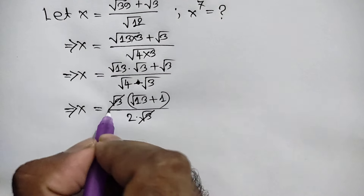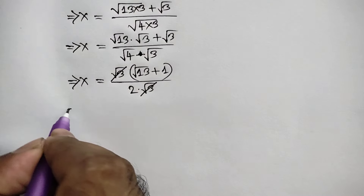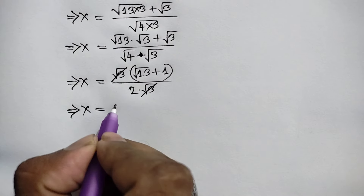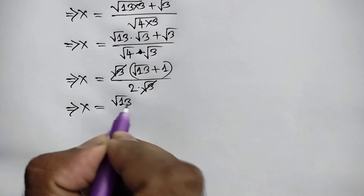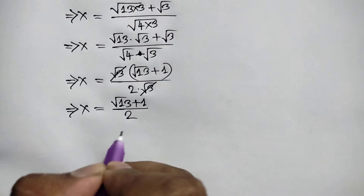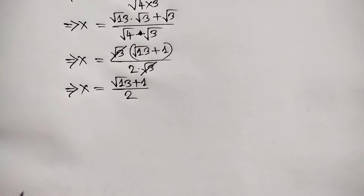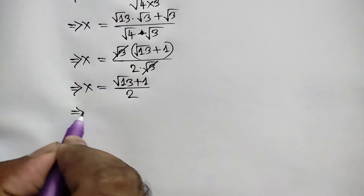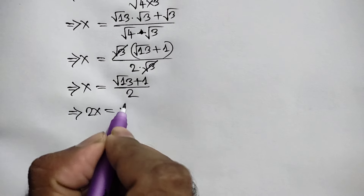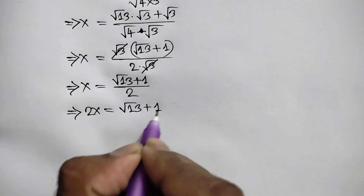The square root of 3 cancels out, so we get x equals (square root of 13 plus 1) over 2. Now multiplying both sides by 2, we get 2x equals square root of 13 plus 1.